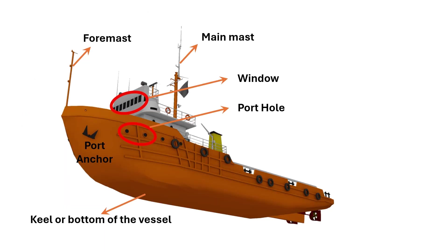The rounded window inside the deck of a vessel is called a porthole. The superstructure windows are generally rectangular. A vessel generally has three masts: foremast, mainmast, and sternmast.